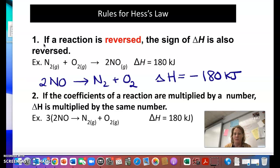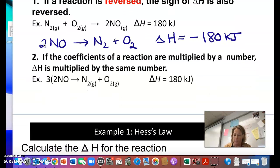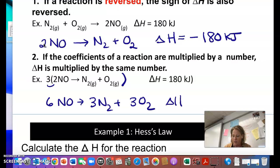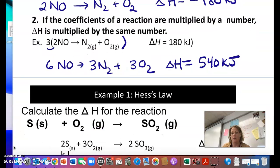Another thing, and again, this will make more sense once we start applying it, but if I have to multiply a reaction, the coefficients, so like this would become 6 NO and then 3 nitrogens plus 3 oxygens, I would also then take that delta H value and multiply it by 3. So when I multiply 180 kilojoules by 3, I get 540 kilojoules. So I can multiply a reaction. The coefficients get multiplied, but also the delta H does.